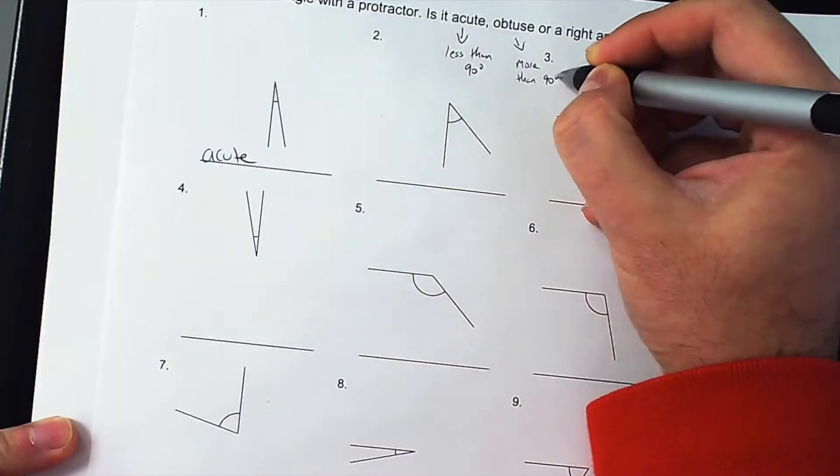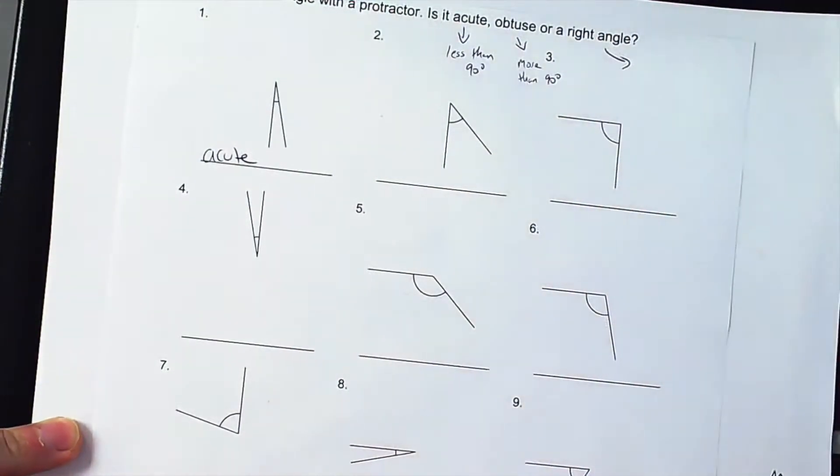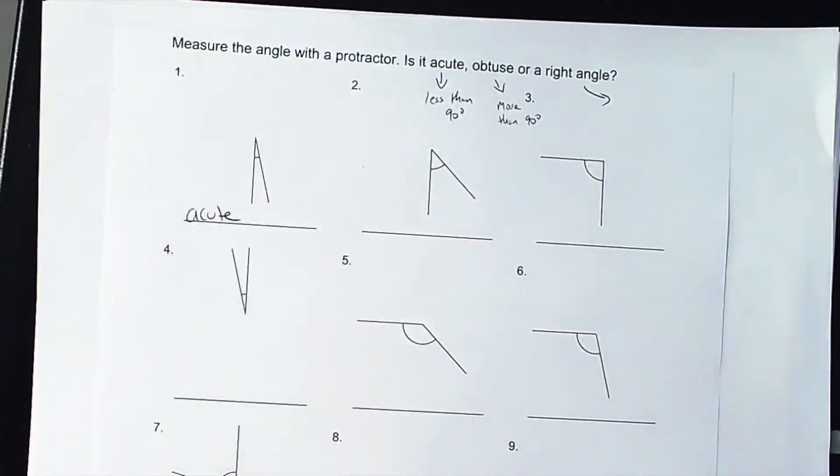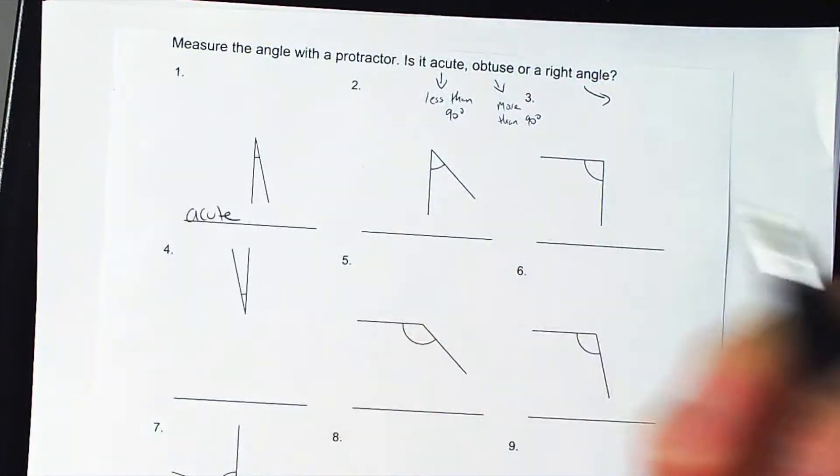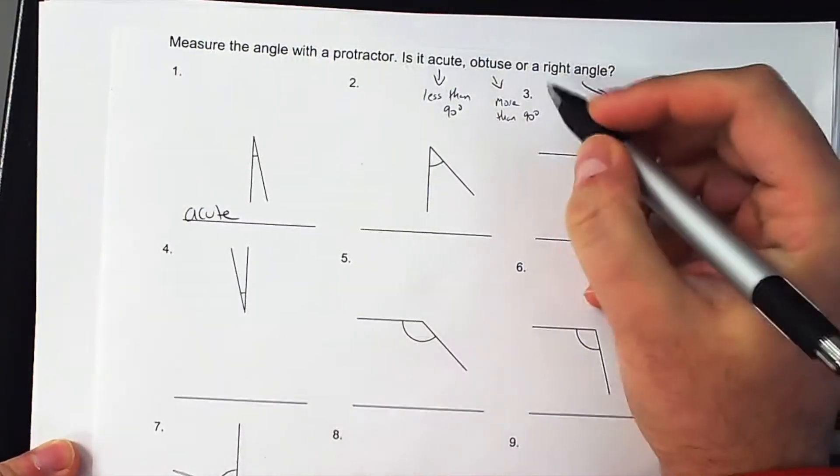And then a right angle, what is a right angle? 90 degrees exactly.